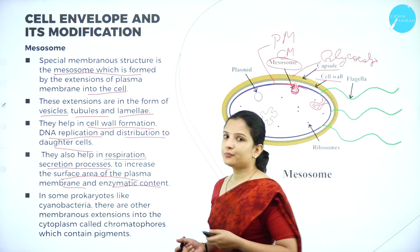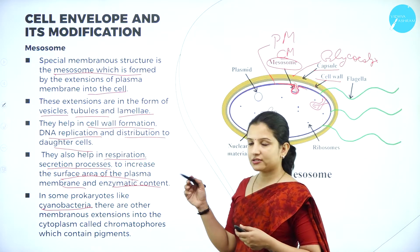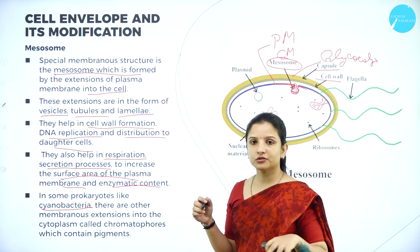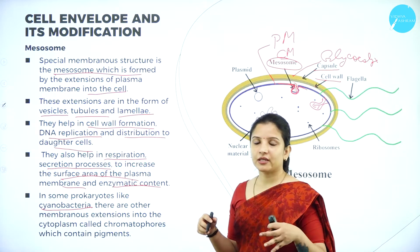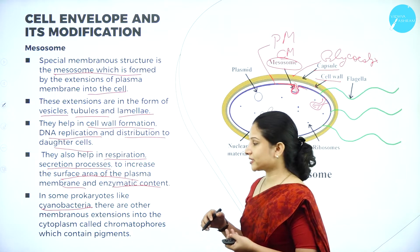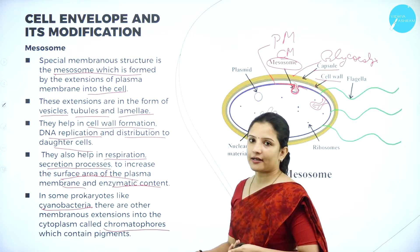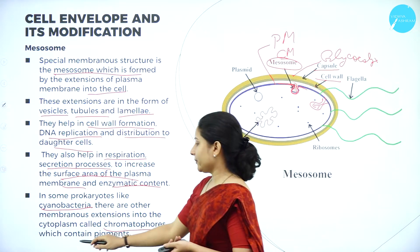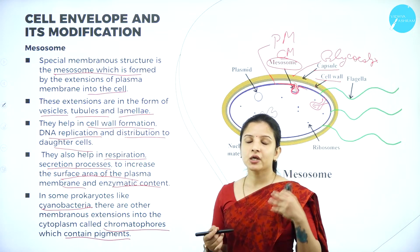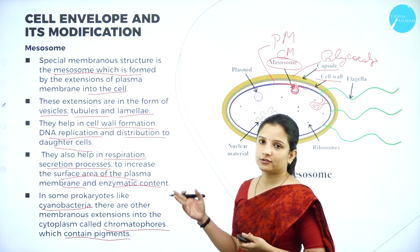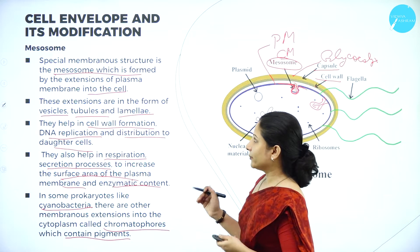In some prokaryotes such as cyanobacteria, apart from mesosomes, there are also other membranous extensions called chromatophores, which contain pigment. Chroma means color, so chromatophores are pigmented structures present in these organisms.